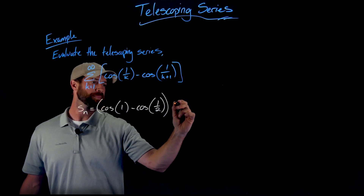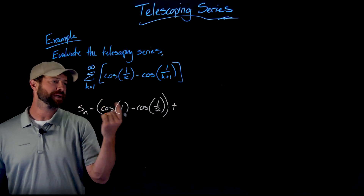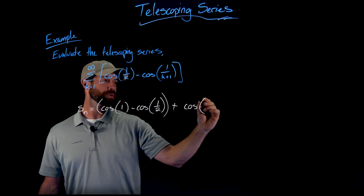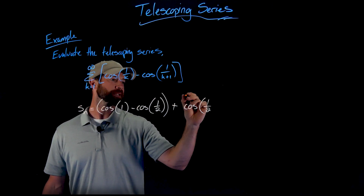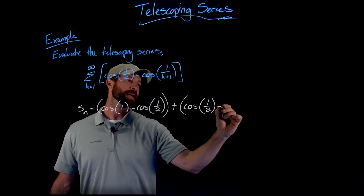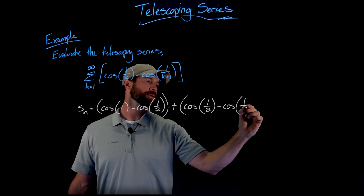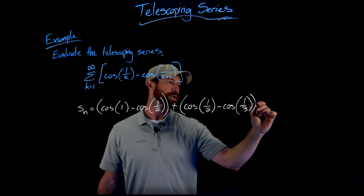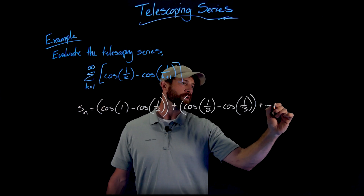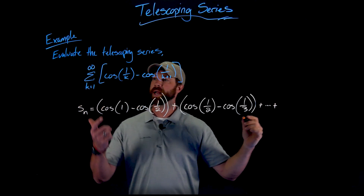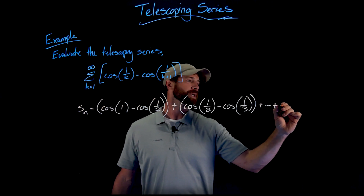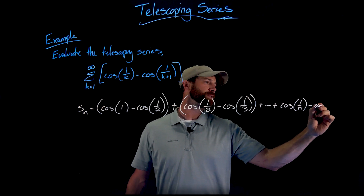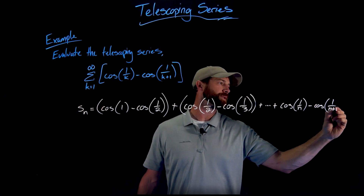Continuing on, iterating up, our k value is now two. So what we get is the cosine of one over two, minus the cosine of one over three — three being two plus one. And this goes on and on, all the way down to where our nth term in the nth partial sum would be the cosine of one over n minus the cosine of one over n plus one.